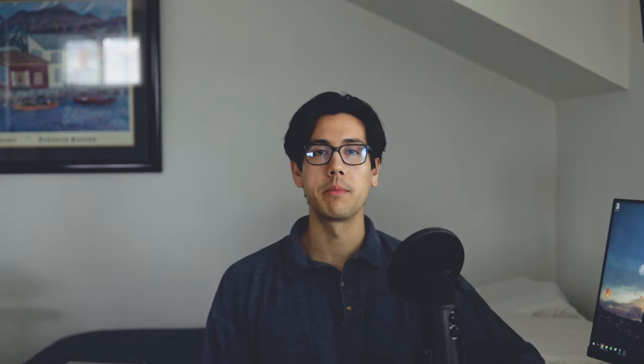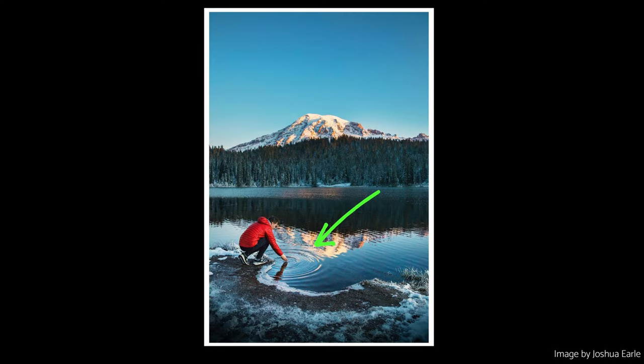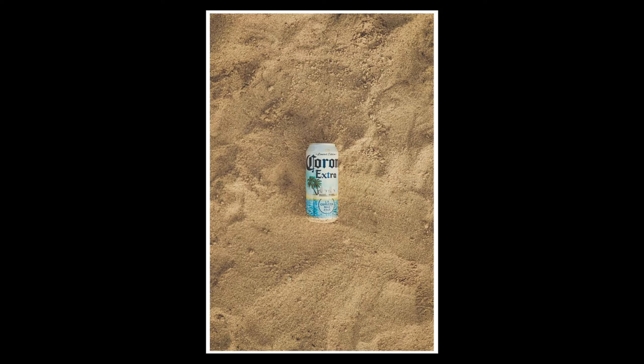The eighth tip is to use texture. Adding texture to an image is a great way to add depth and interest while also creating emphasis on certain elements. Texture can be found in many forms, such as rough surfaces, smooth surfaces, or even in the patterns and lines of an object. For example, by using interesting textures on the focal point you want to emphasize along with a background that has no texture, it can create a contrast that will draw emphasis to that area. You'll want to strike a balance between highlighting the unique characteristics of the texture while also creating a visually appealing composition that puts emphasis on your main subject or focal point.